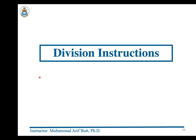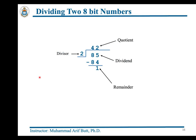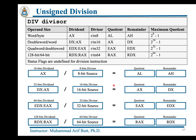We are done with the multiplication instructions. Let us now start with the division instructions. This slide shows how on paper we divide two base-10 numbers: the dividend 85 is divided by divisor 2, giving 42 as the quotient and 1 as the remainder. This slide summarizes the behavior of the x86 DIV instruction.